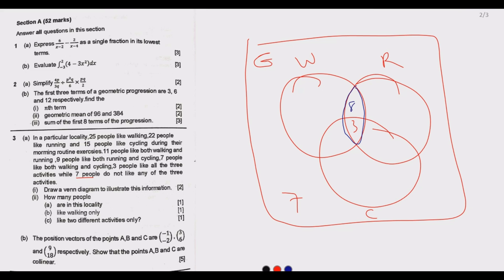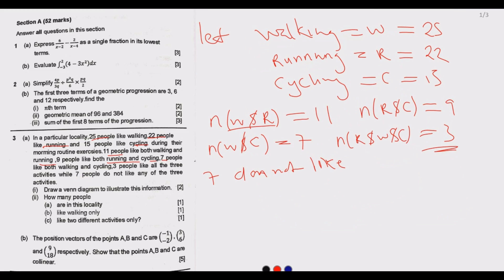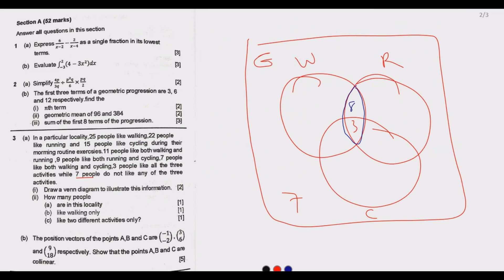For running and cycling: 9 people like both, and we already have 3 in the centre, so 9 minus 3 gives us 6 in the R∩C only region. For walking and cycling: 7 people like both, and with 3 in the centre, 7 minus 3 gives us 4 in the W∩C only region.